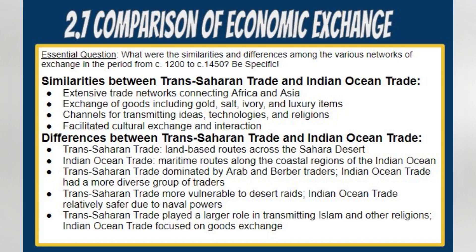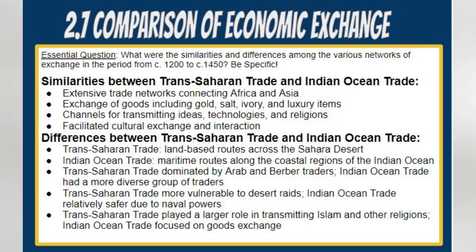In terms of their primary focus, the Silk Road played a significant role in the transmission of ideas and religions across different civilizations. Meanwhile, the Indian Ocean trade primarily centered around the exchange of goods, although it also facilitated some degree of cultural and intellectual interchange. Shifting focus to the Trans-Saharan trade and the Indian Ocean trade, both networks emerged as major trade routes during the Middle Ages, connecting Africa and Asia and facilitating the exchange of goods, ideas, and cultures. They exhibited similarities such as their extensive reach, their facilitation of the exchange of diverse goods like gold, salt, ivory, and luxury items, and their role as conduits for the transmission of ideas, technologies, and religions.